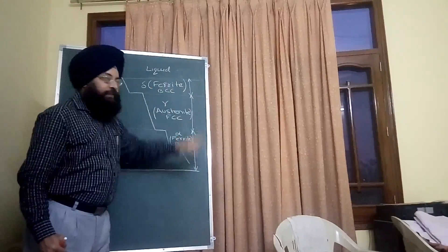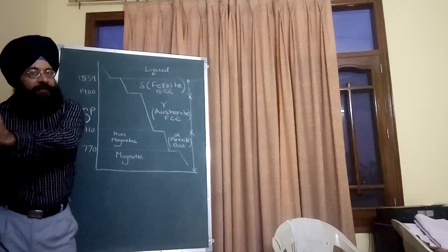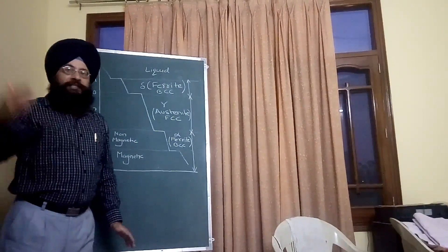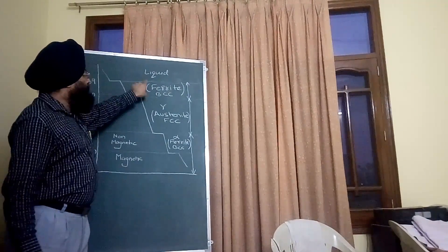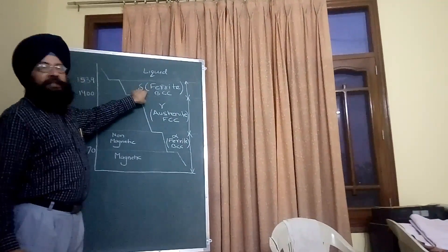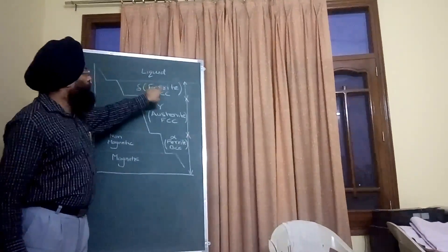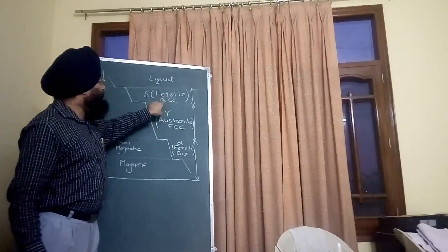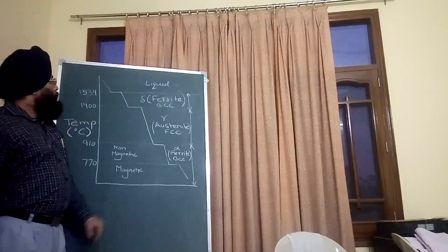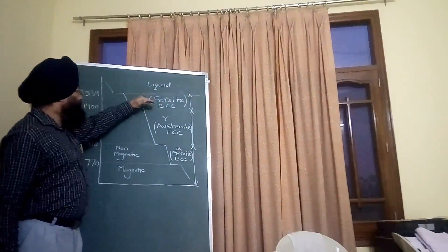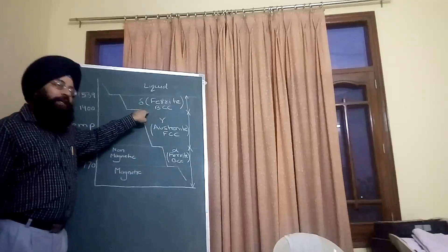The body-centered cubic structure will be discussed in a separate lecture on lattice structures. Iron below 1539 degrees centigrade is known as delta iron or delta ferrite, and it has a body-centered cubic structure. This structure remains stable down to 1400 degrees centigrade.